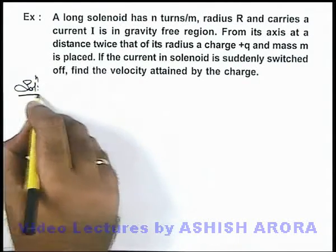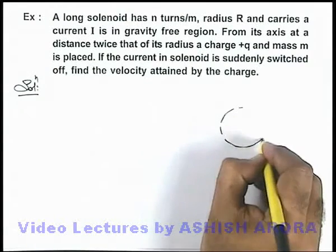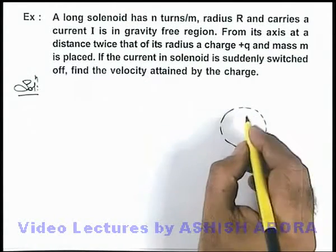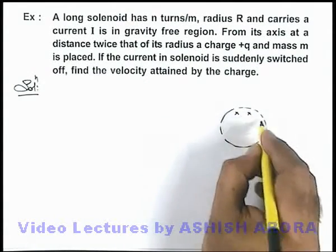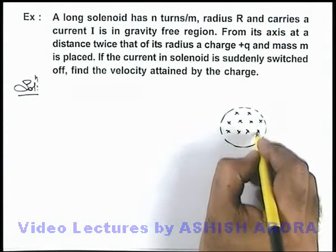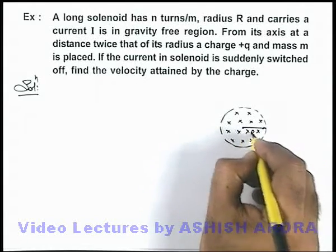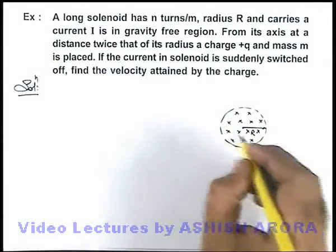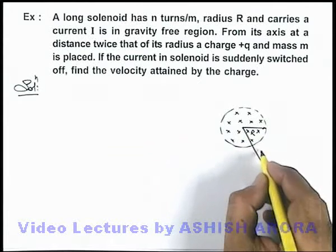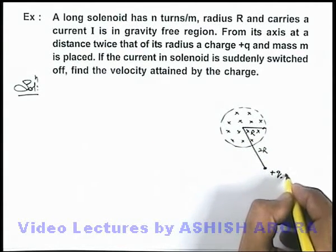Now in this situation, let us first draw the situation. Say this is a solenoid in which, due to current, a magnetic induction exists in inward direction parallel to the axis of this solenoid. This is of radius R, and at a distance 2R from the center, charge +q which is of mass m is placed.